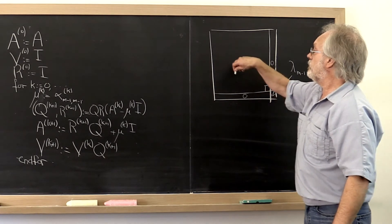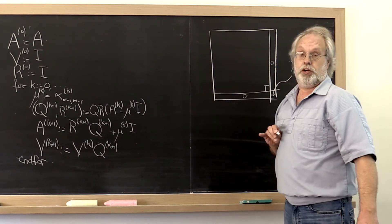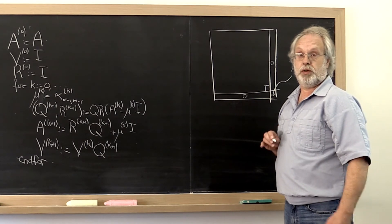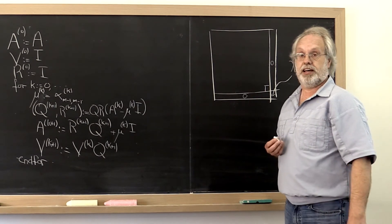And in that way we will eventually deflate down to a one by one matrix at which point we have found all of our eigenvalues and eigenvectors.